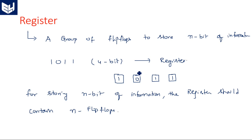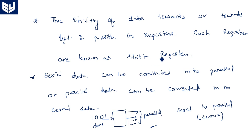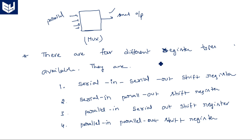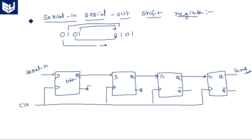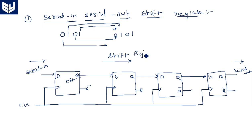In this video I am going to explain the programming for a serial in serial out shift register. In the last class we started registers — a register is a group of flip-flops, and its main purpose is to be used as a shift register. There are four types: serial in serial out, serial in parallel out, parallel in serial out, and parallel in parallel out. In serial in serial out, data enters serially and leaves serially, moving from left to right — that's why it is called a right shift register.